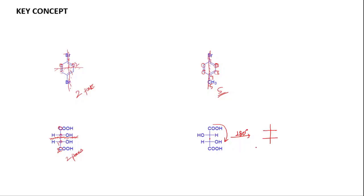Upon rotating 180 degrees, the CO2H group comes down, the other CO2H goes up, and we obtain exactly the same molecule. This means the molecule contains a C2 axis of symmetry through this central point. So this carbon is equivalent to the other carbon, and this carbon is equivalent to the other carbon. Once again we are getting only 2 peaks.